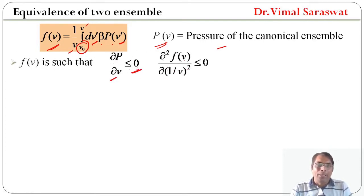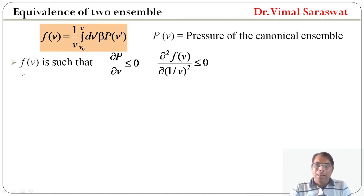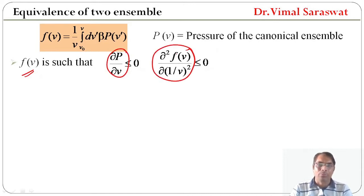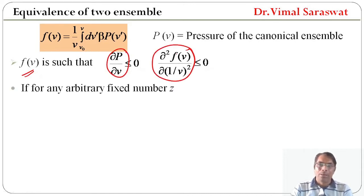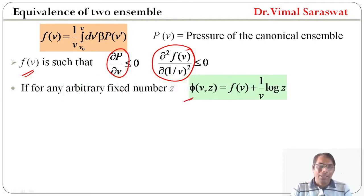Also, the second derivative of f(v) with respect to 1/v is less than or equal to 0. So, f(v) satisfies both of these conditions. If for any arbitrary fixed number z, phi — which is a function of small v and z — is equal to f(v) plus 1 over v times log z.